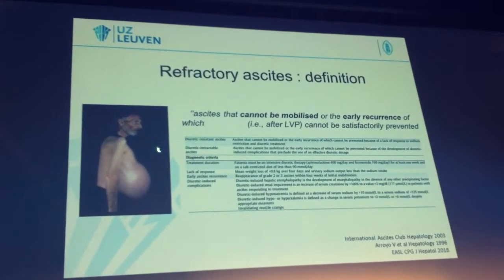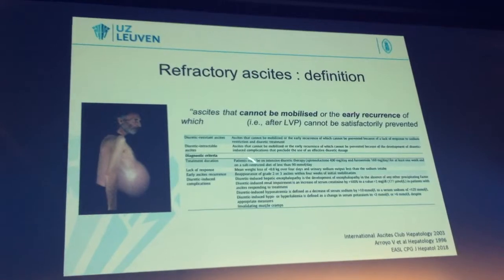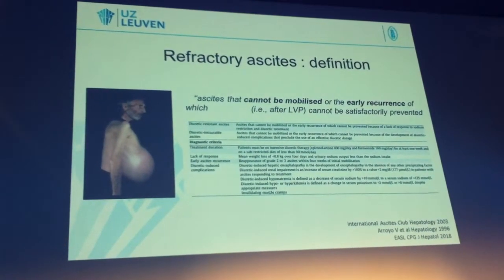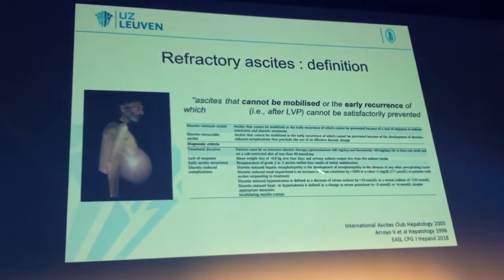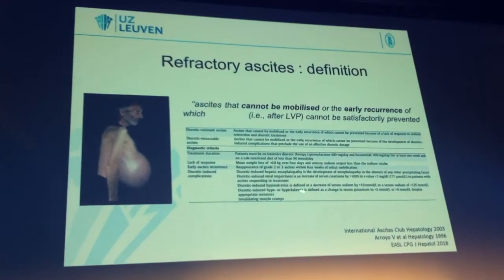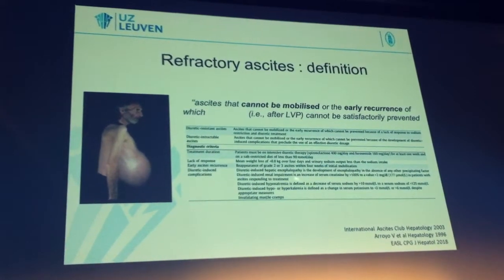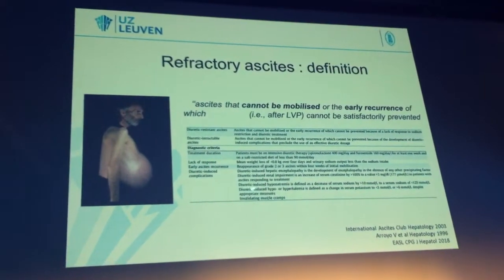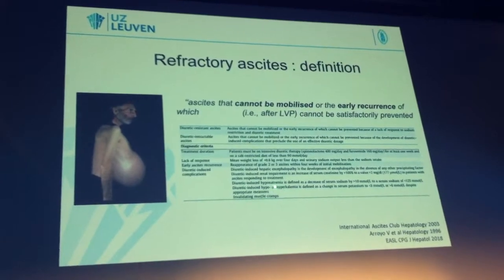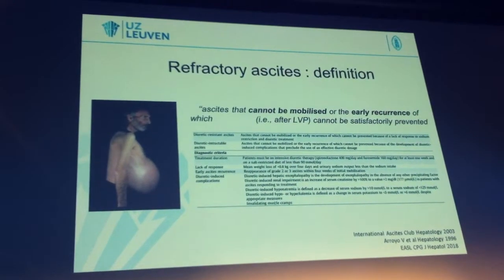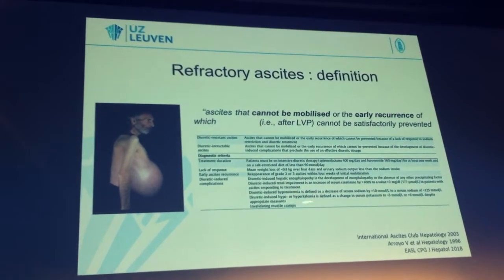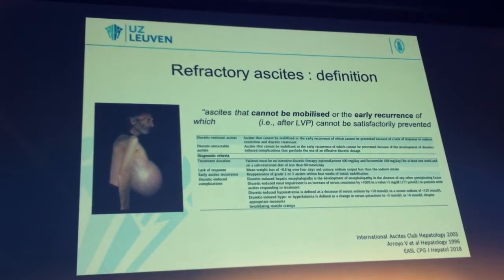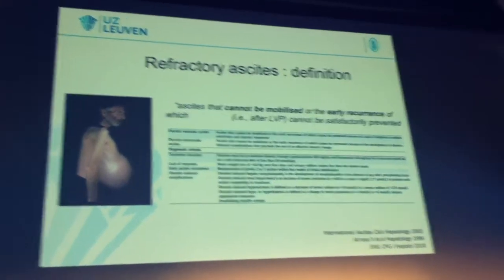The other category is diuretic-intractable ascites, in which you cannot mobilize ascites due to diuretic-related complications such as renal impairment, diuretic-induced hyponatremia, diuretic-induced hepatic encephalopathy, hypokalemia or hyperkalemia, and invalidating muscle cramps.